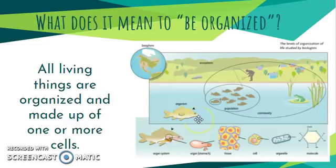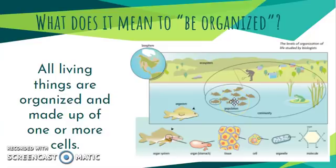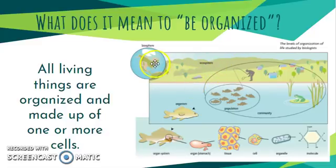Later in the semester, we will learn about how organisms are also part of another system of organization, where the organism is one part of a population — a whole bunch of the same organism put together. A population is part of a community, which is a bunch of populations all in the same space at the same time. Those communities are put together to make ecosystems, and eventually the whole planet. That's where we'll end our semester, and we're starting out way back here with this bottom rectangle, all about an organism and what it is made of.